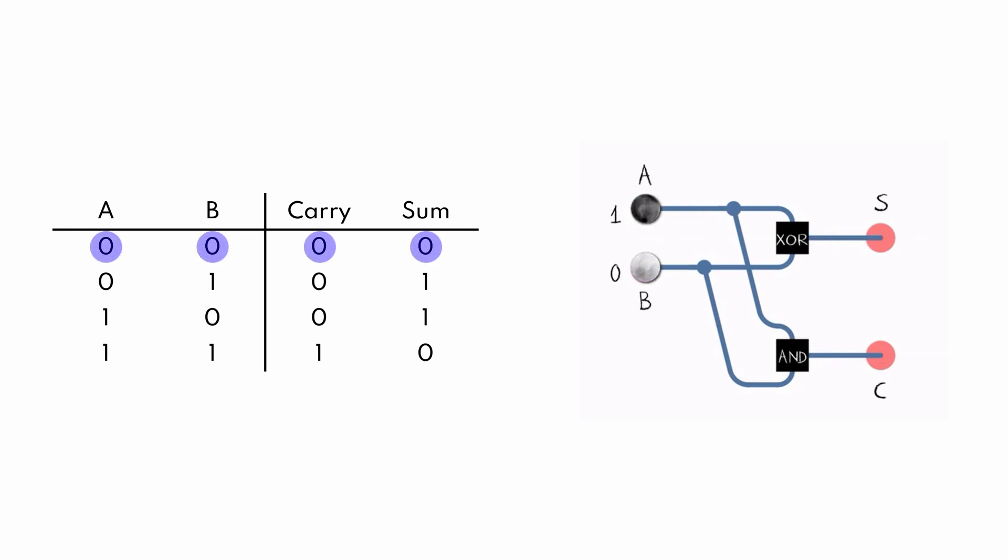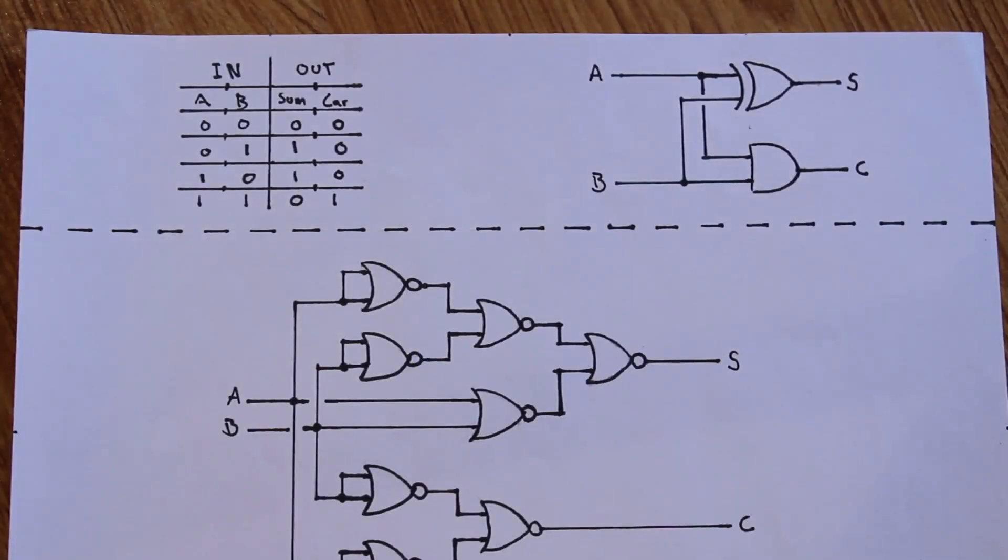So zero plus zero is obviously zero, zero. Zero plus one is zero, one. One plus zero is also zero, one. And then finally one plus one is one zero. So in order to build a half adder that gives us this functionality, it's really simple. We can just do an exclusive OR gate and an AND gate.